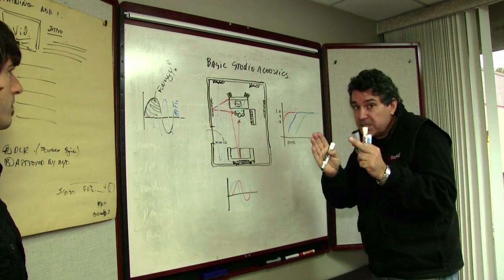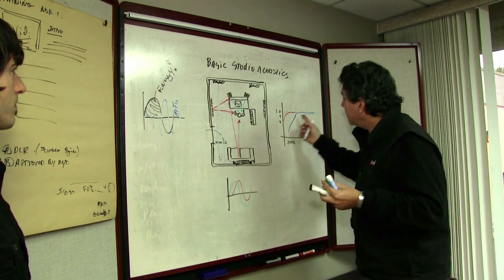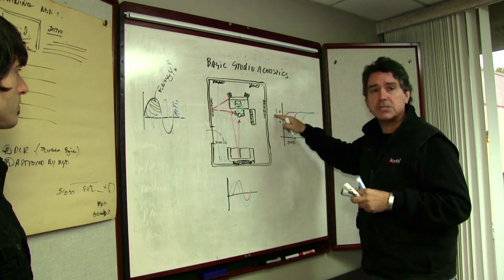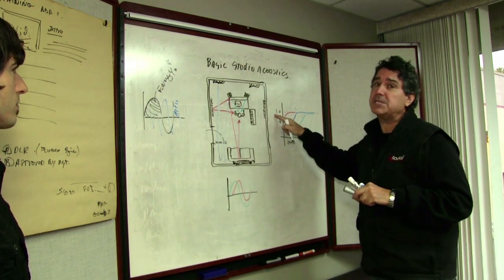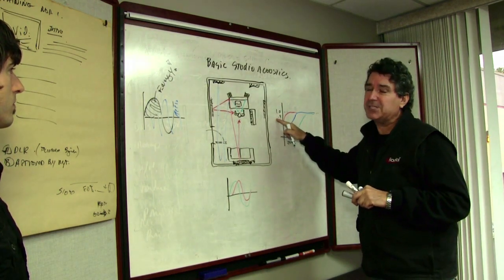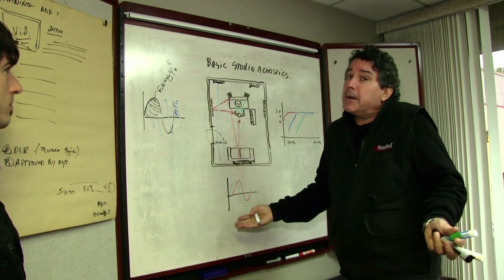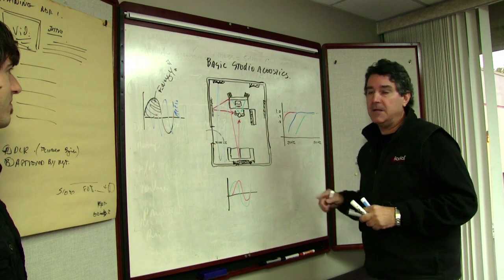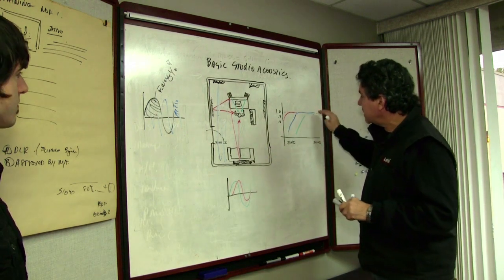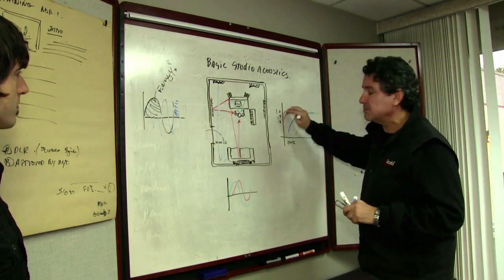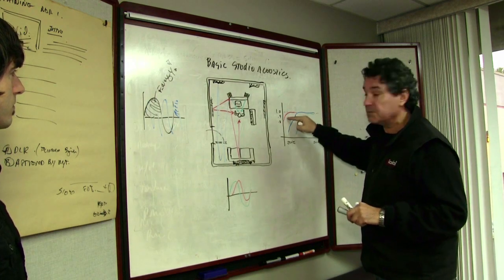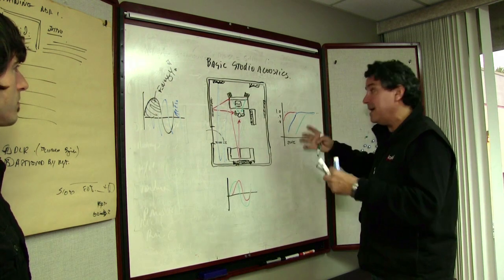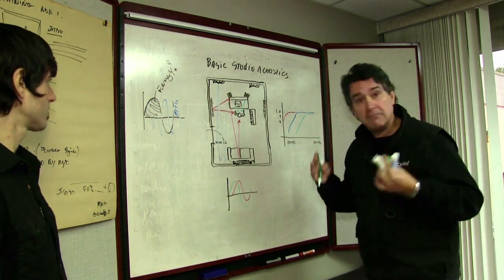As you get into deeper, thicker, more dense material, you get lower and lower frequency absorption. This graph is called the absorption coefficient. One means 100% absorption, .9 means 90%. Just like a microphone, you want as flat of a frequency response as possible. You might put some one-inch, some two-inch, and some three-inch panels in your room.